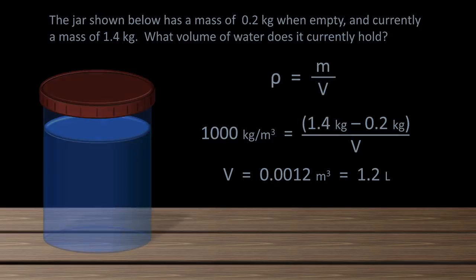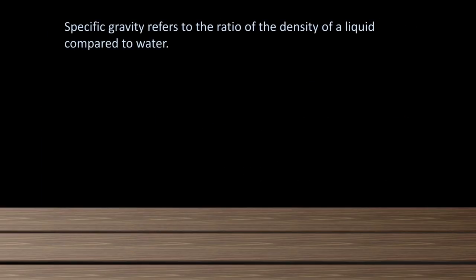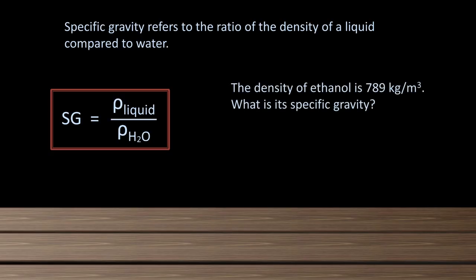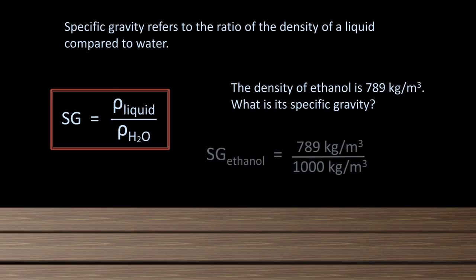Moving on from density, let's discuss the concept of specific gravity. Specific gravity refers to the ratio of the density of a substance compared to that of water. Mathematically, specific gravity, often abbreviated SG, equals the density of the liquid divided by the density of water. So if the density of ethanol is 789 kilograms per cubic meter, what is its specific gravity? 789 divided by 1,000 is 0.789.